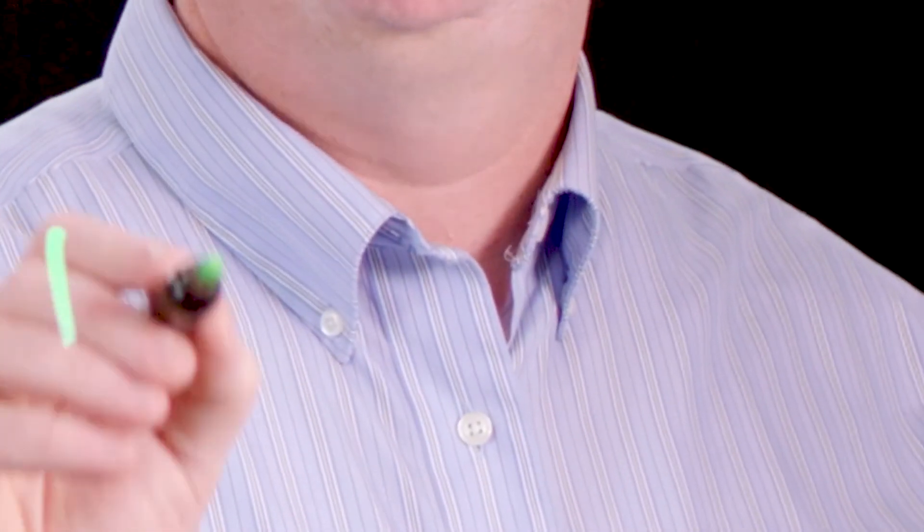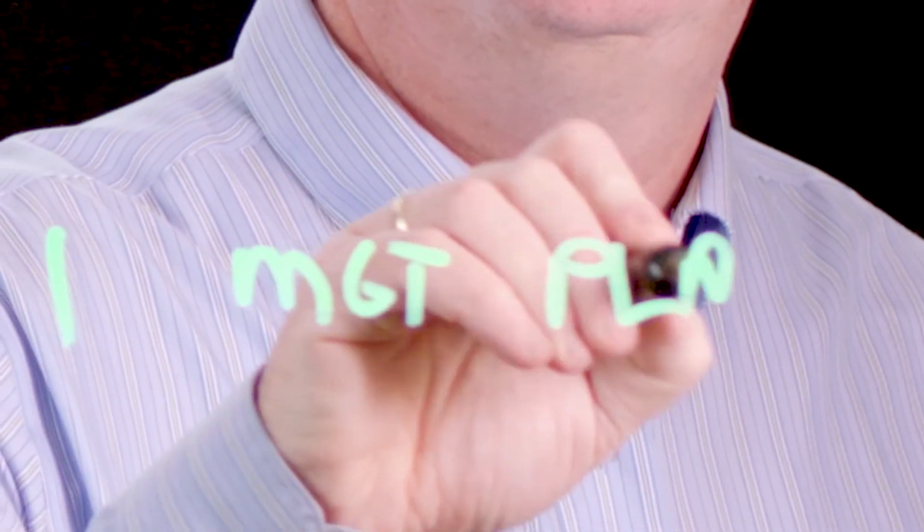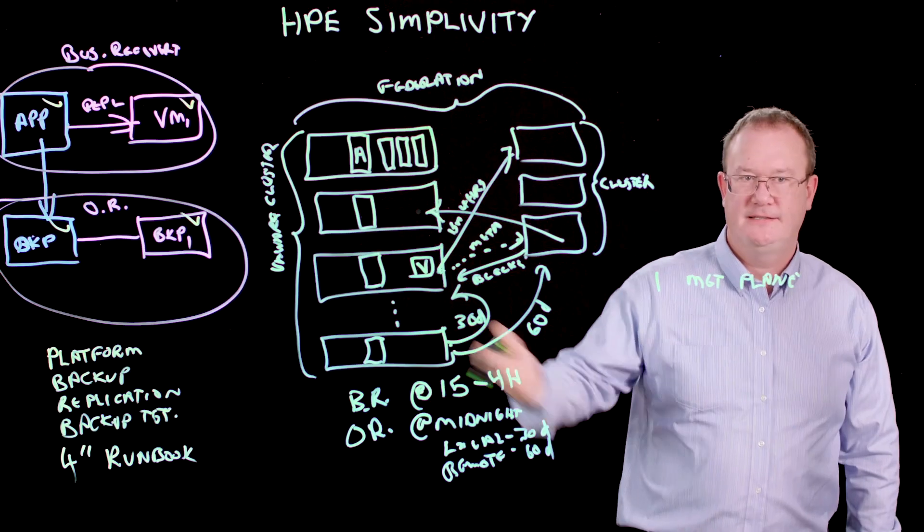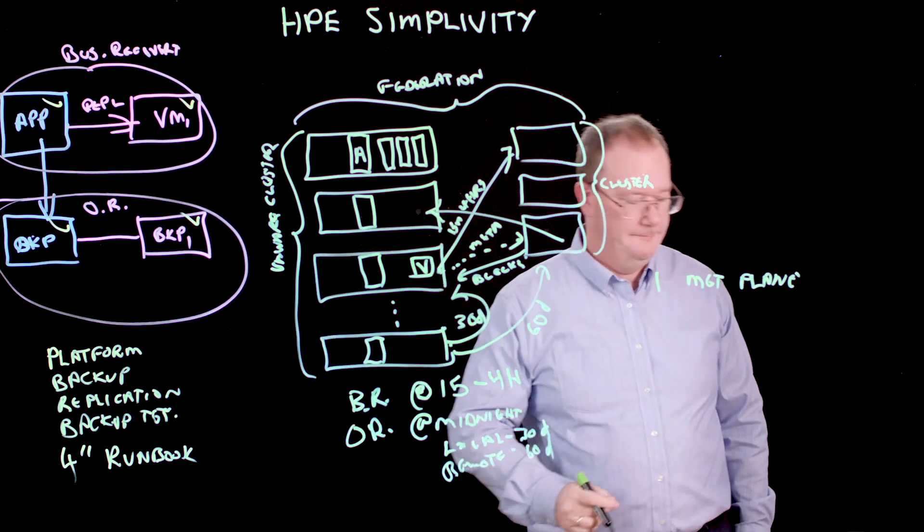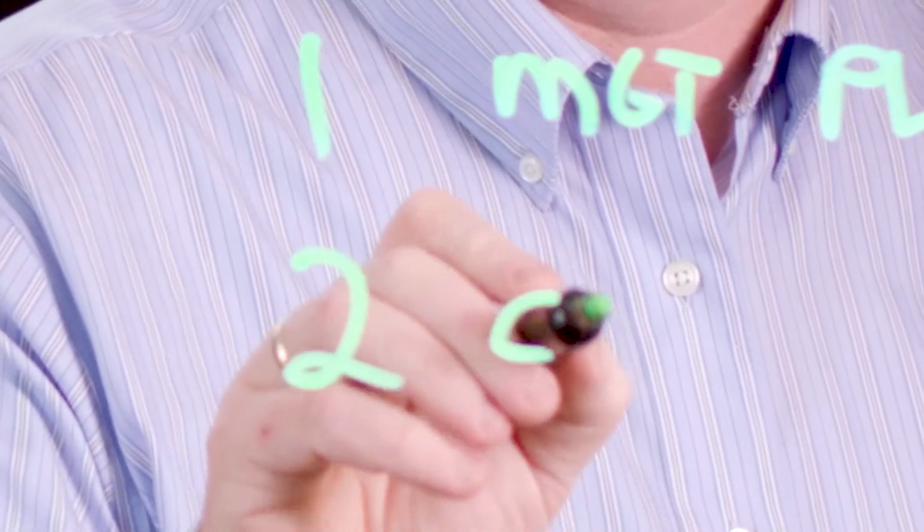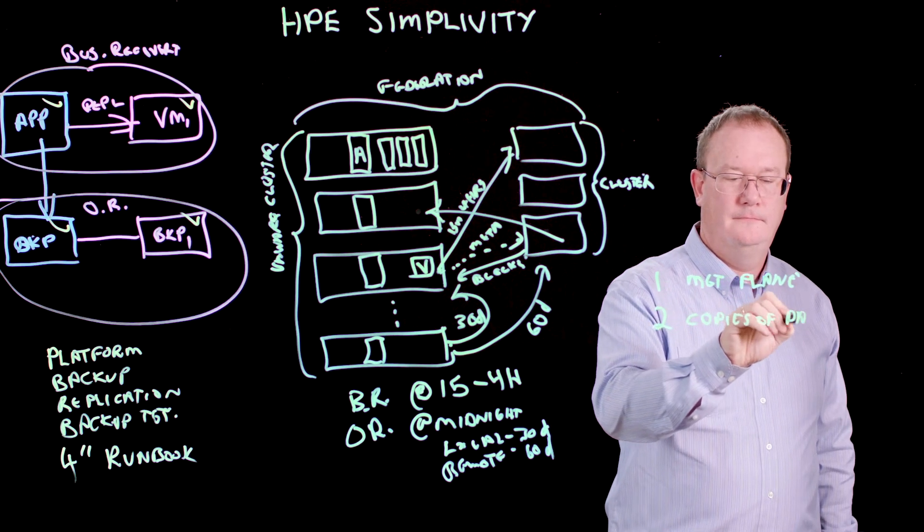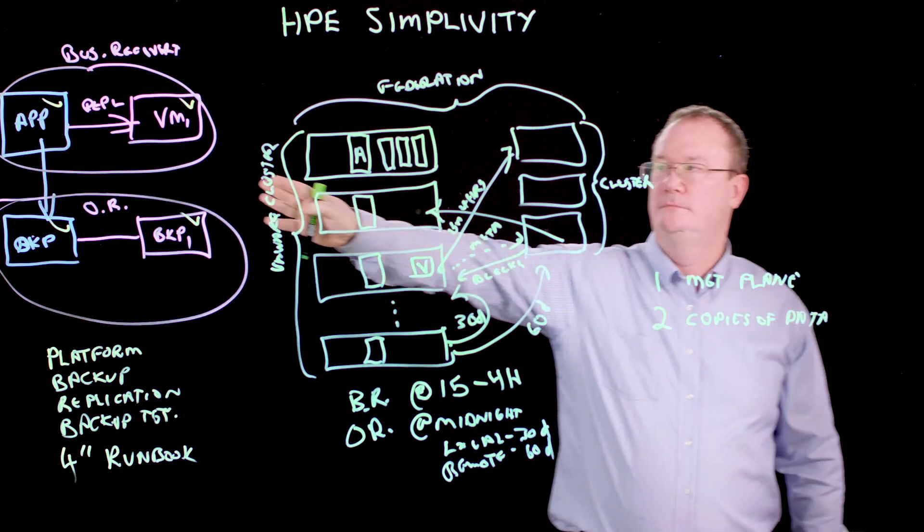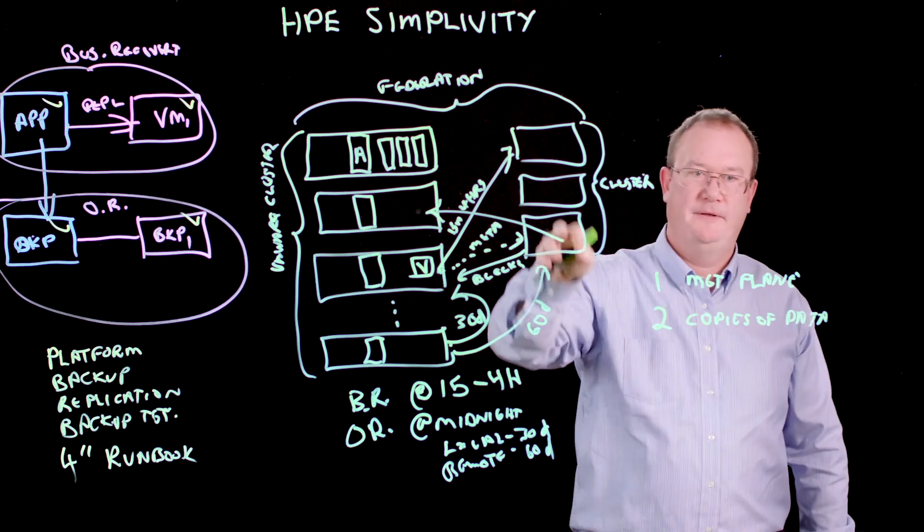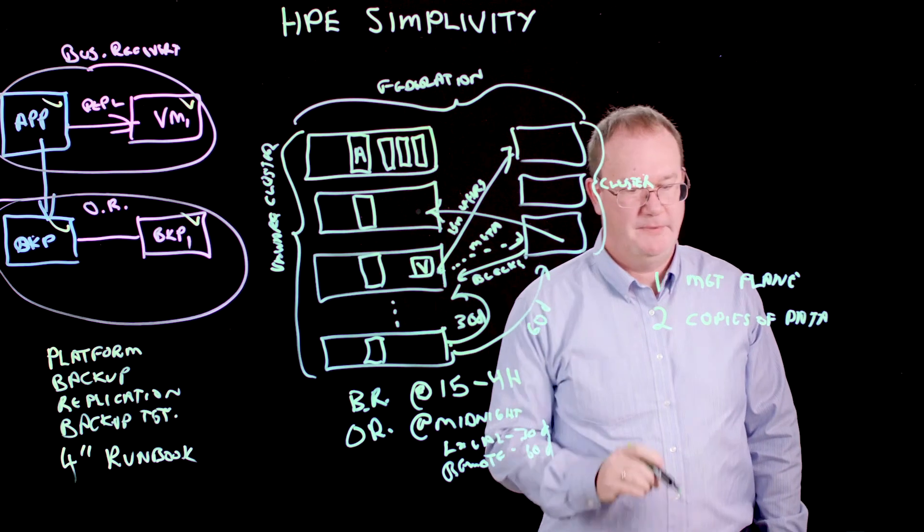So let's take a quick look at the benefits and how they compare over here. One management plane. That's it. Not six, not five, not 20. One. We have two copies of our data, not four. I have a copy at my local. I have a copy at my remote. Not four separate base copies.